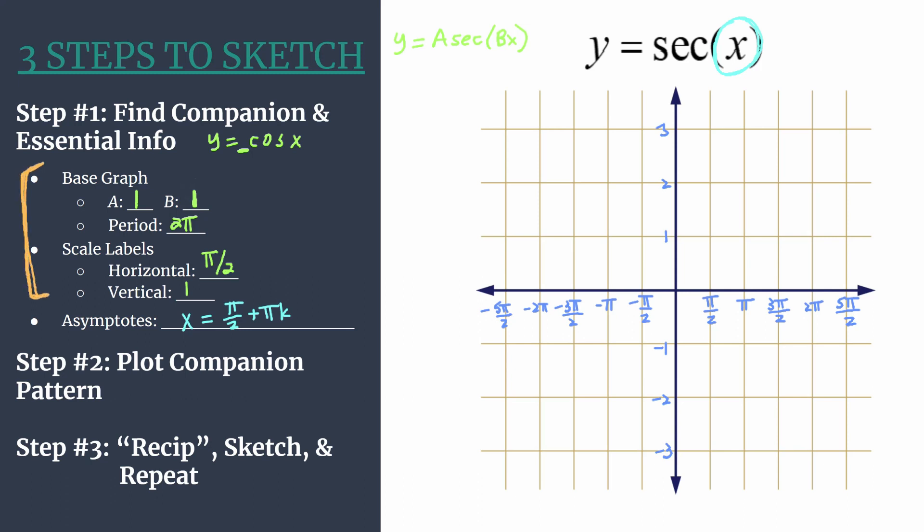Okay, we know a cosine pattern goes maximum, zero, minimum, zero. And we know it's unreflected, and that's why we'll start with the maximum. So on the y-axis, we have a companion pattern point.